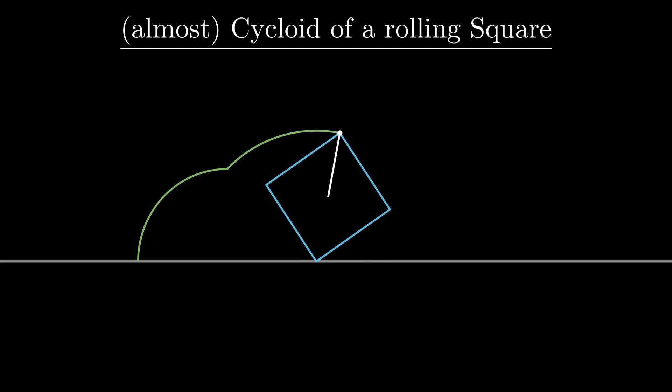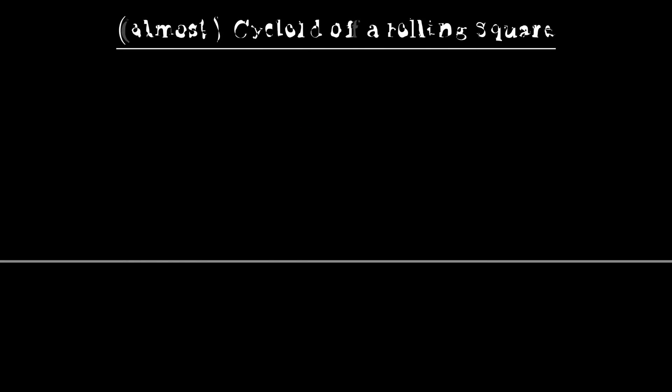For example, here's how the curve looks like when a square rolls on a straight line. And this is how the curve would look like when we roll a pentagon.